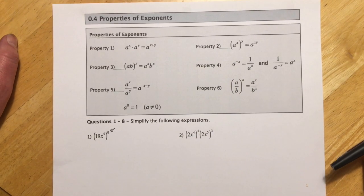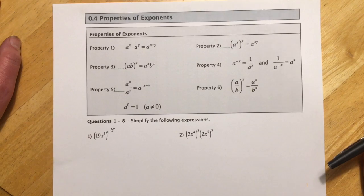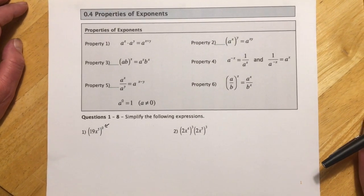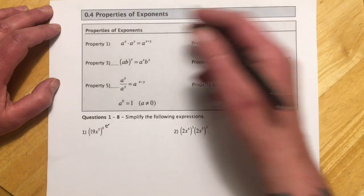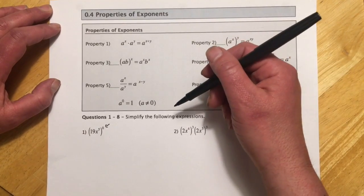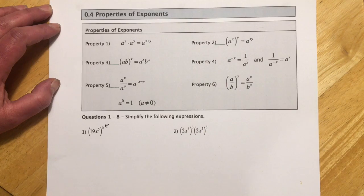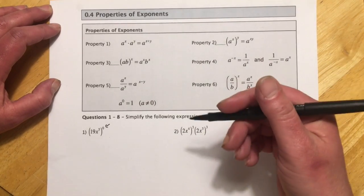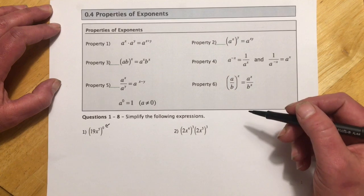Hey guys, so this is the review lecture for Exam 2, Math 098, and we're starting with properties of exponents. For the actual test, at least in my class, you will get a sheet of notes with the properties of exponents on it, and then it will also include the list of squares and the list of cubes from the factoring sections.